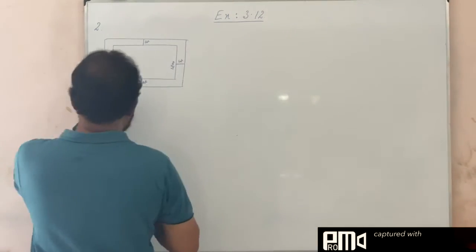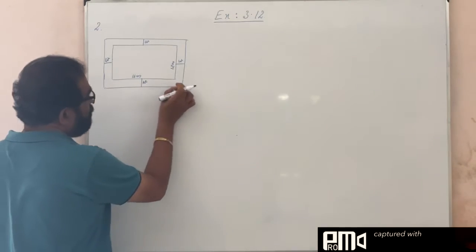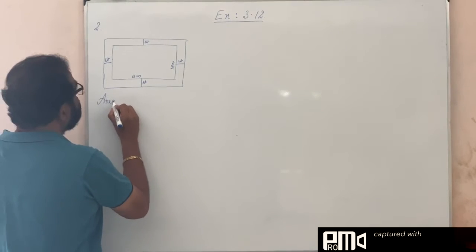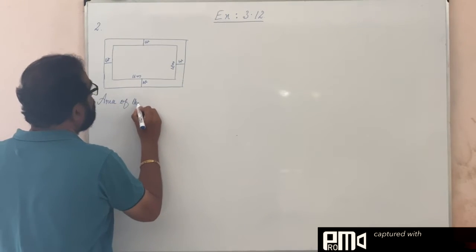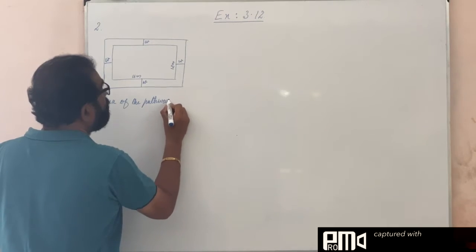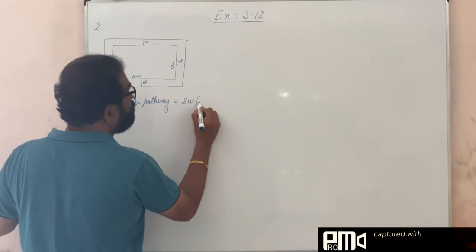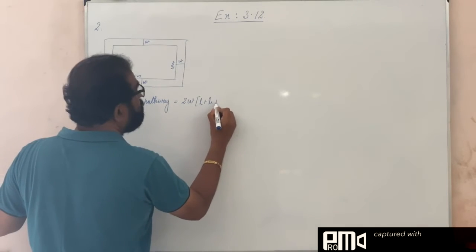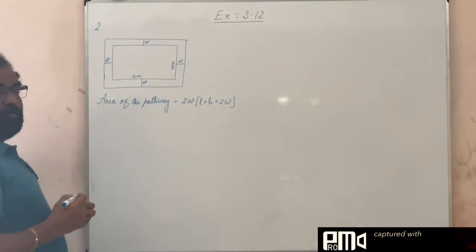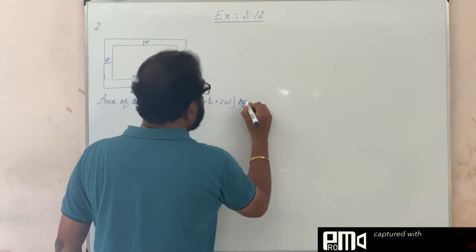When a pathway is given like this outside, we have a formula: area of the pathway outside is equal to 2W into (L plus B plus 2W) square units. Remember this formula.